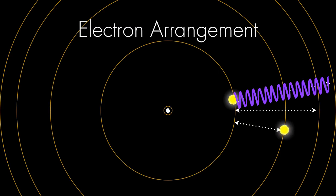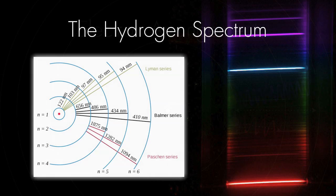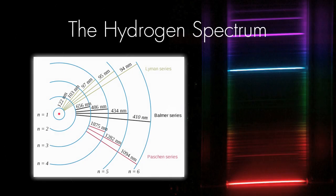An electron that makes a shorter jump will release lower frequency, lower energy light that might look red to us. Here is the complete emission spectrum of the hydrogen atom. On the right-hand side, we see the visible spectrum, taken in this photograph.